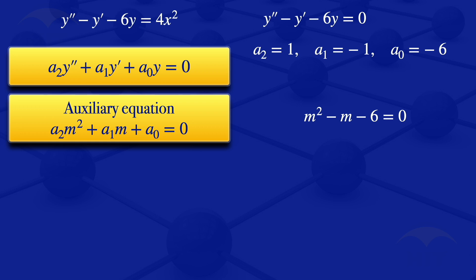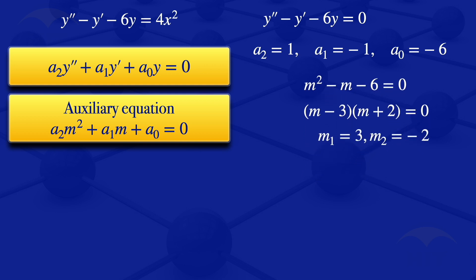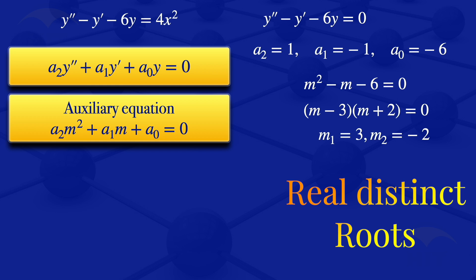We now find the roots of this equation by factorizing — finding numbers that multiply to give minus 6 and add to give minus 1. Those numbers are minus 3 and 2. So our equation becomes (m minus 3)(m plus 2) equals 0, giving us m1 equals 3 and m2 equals minus 2. These are real distinct roots.